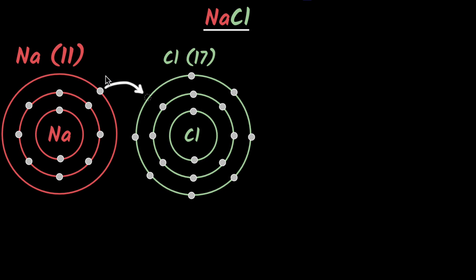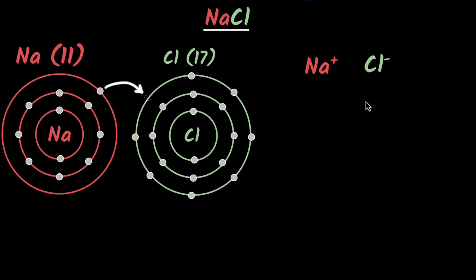Notice what has happened: if sodium loses that one electron, it becomes positively charged. And if chlorine gains an electron, it becomes negatively charged. They have become ions, and since positives and negatives attract, they stick to each other. This is how ionic bonds are formed.